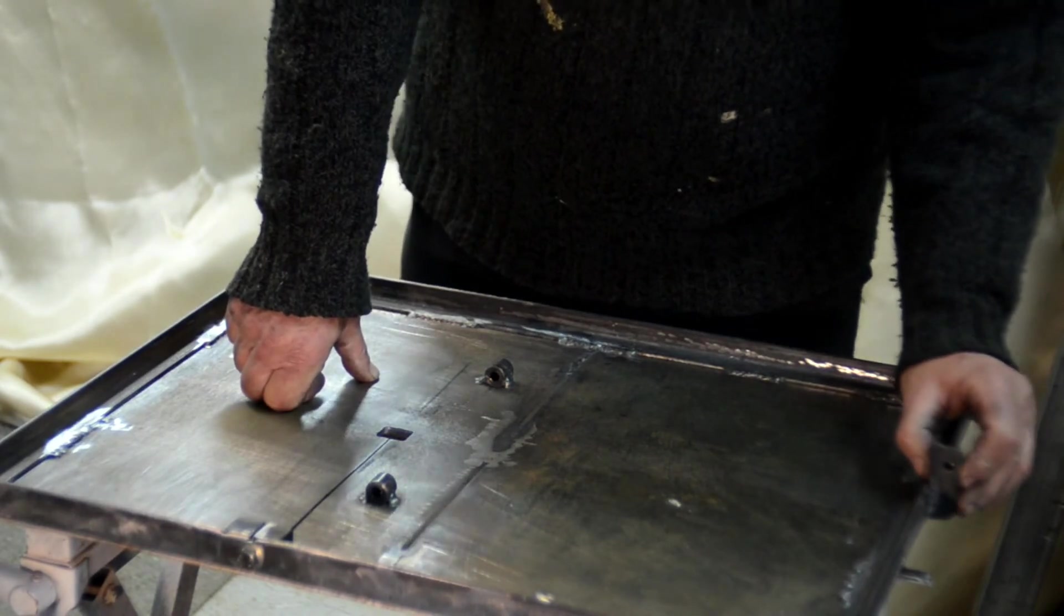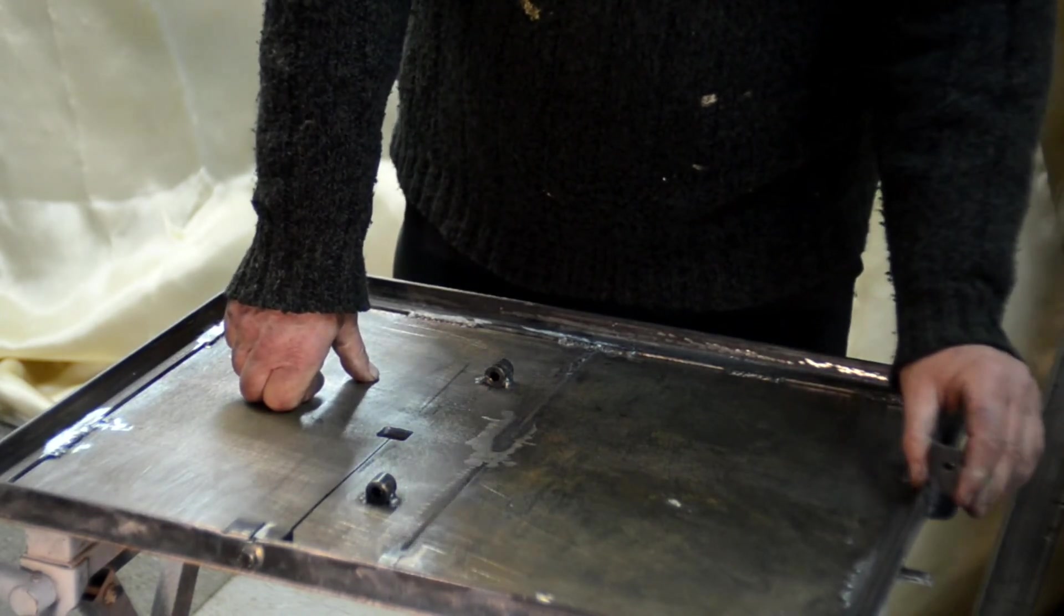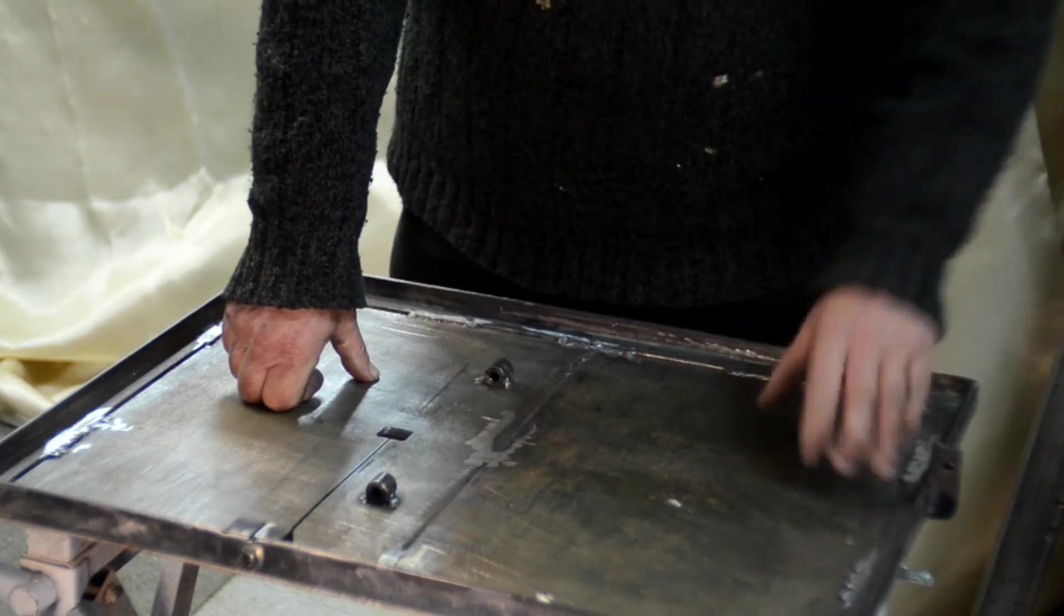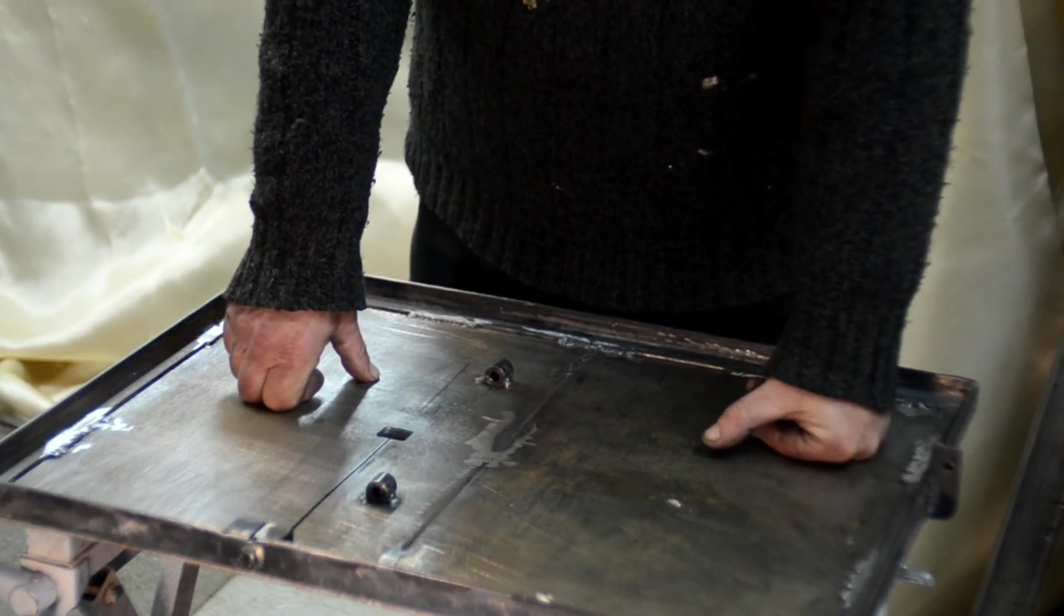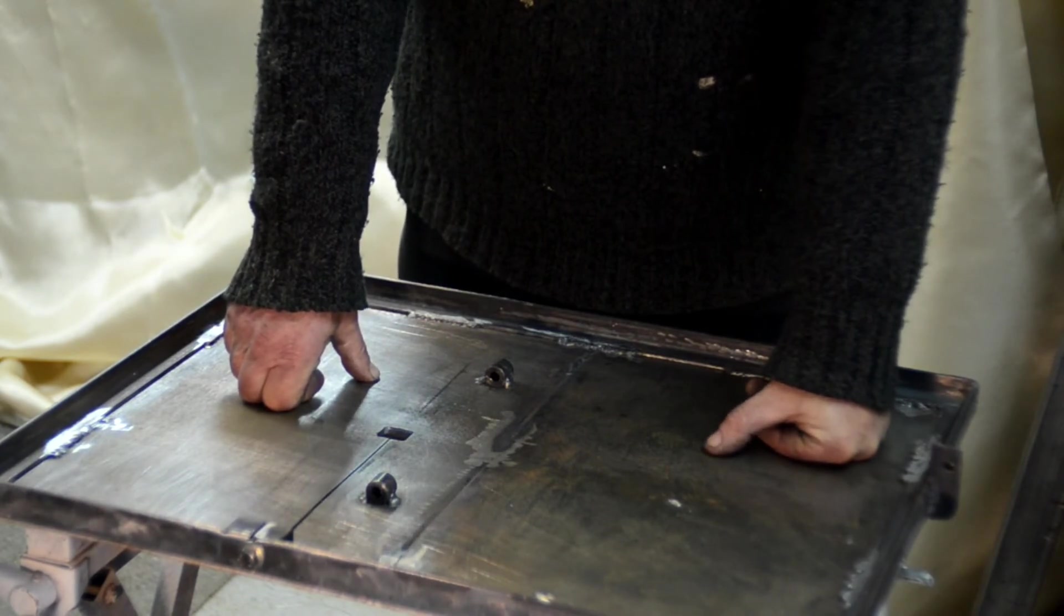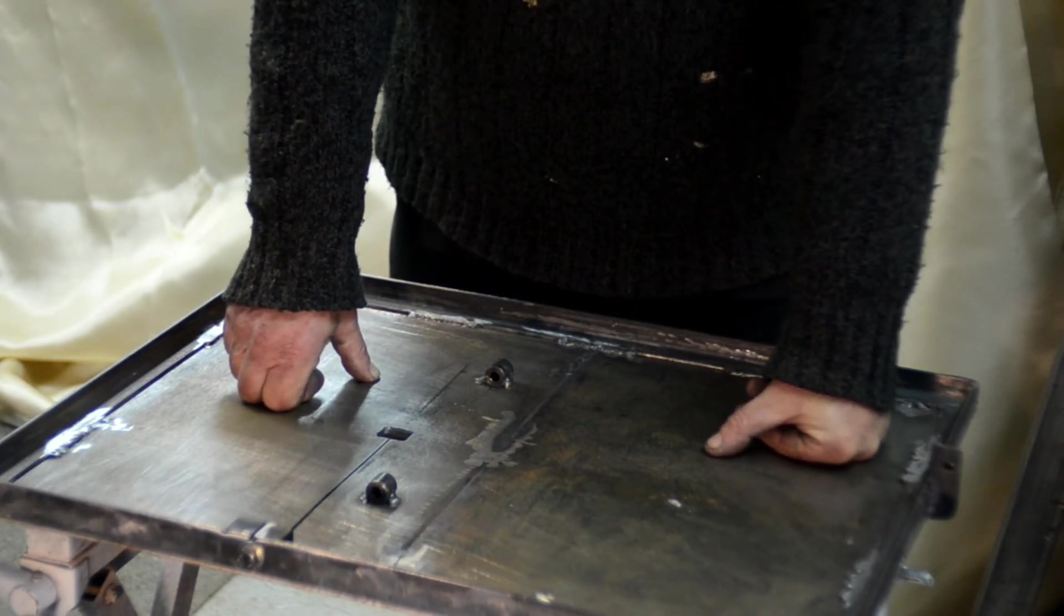This piece that's welded onto the end is the stop to hold the table level. And it will have a strap on which will enable the table to be held anywhere between 90 degrees and 45 degrees.